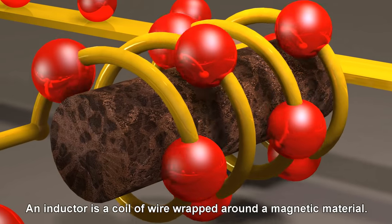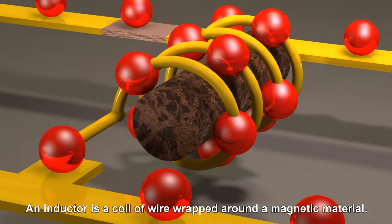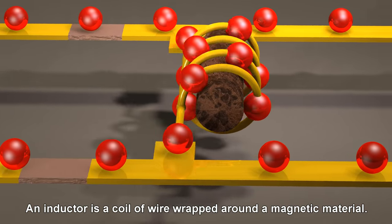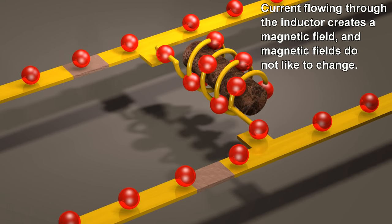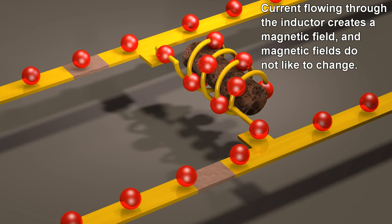An inductor is a coil of wire wrapped around a magnetic material. Current flowing through the inductor creates a magnetic field, and magnetic fields do not like to change.